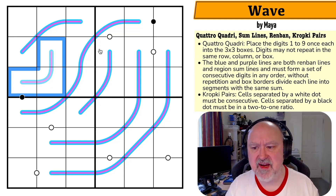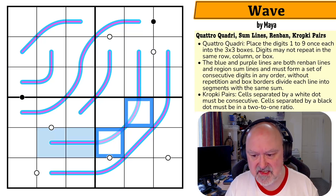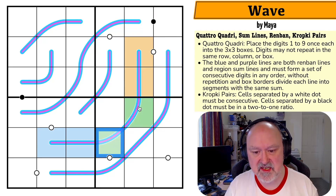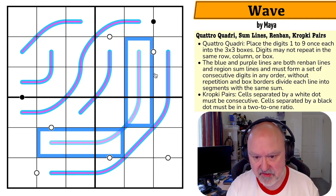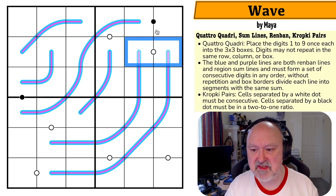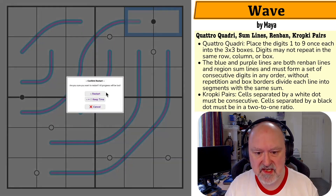The blue and purple lines are both Renban lines and region sum lines. Each line must form a set of consecutive digits in any order without repetition. For example, on this line it could be one, two, three, or two, three, four - but not two, three, five, because that's not a set of consecutive digits. Also, the box border divides each line into segments with the same sum. Each segment's digits must have the same sum as every other segment of that line. We've also got kropki pairs: cells separated by a white dot must be consecutive, and cells separated by a black dot must be in a two-to-one ratio.